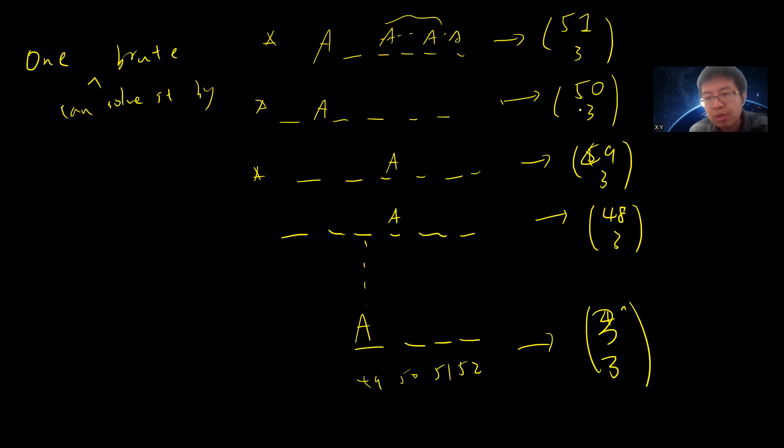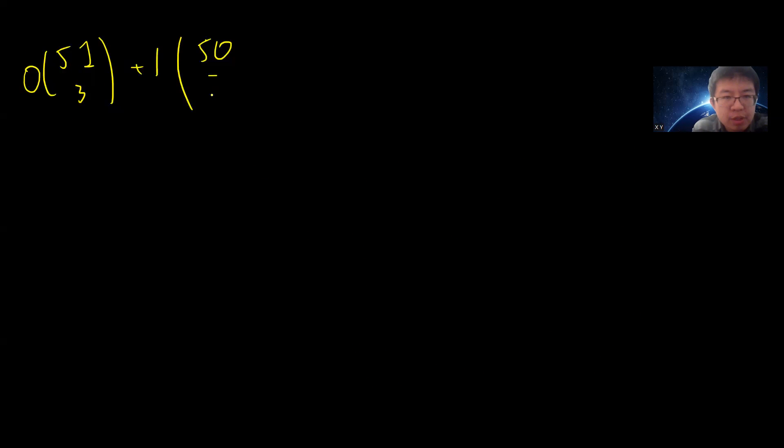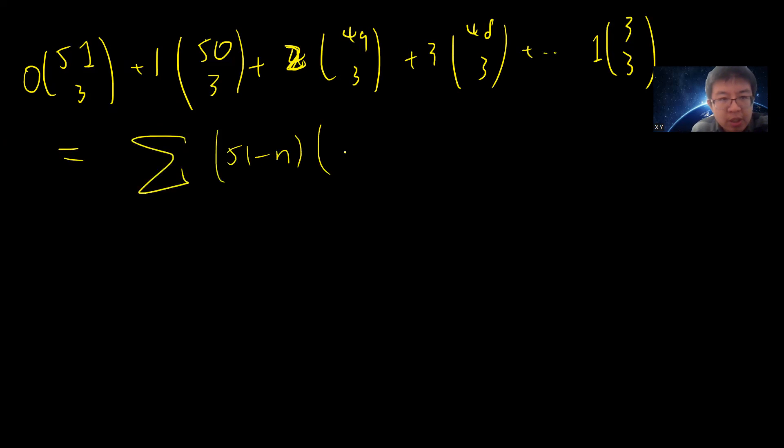The expected number will be the sum over all of this. So 0 times 51 choose 3, plus 1 times 50 choose 3, plus 2 times 49 choose 3, and 3 times 48 choose 3, up to 48 times 3 choose 3. One can solve this by summation of (51-n) times n choose 3.